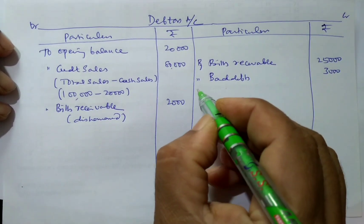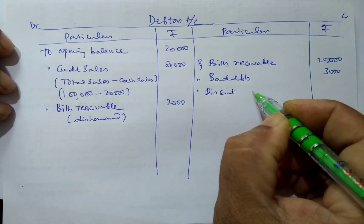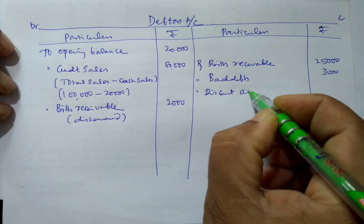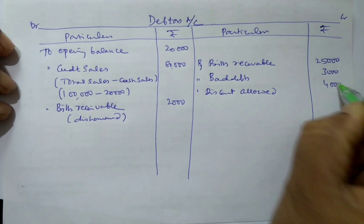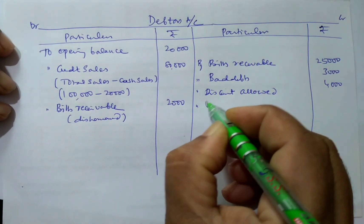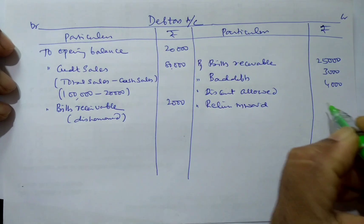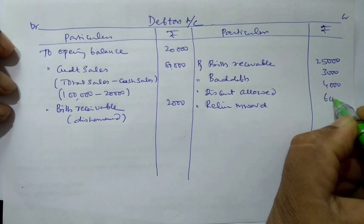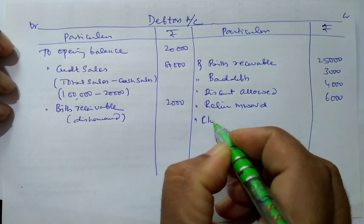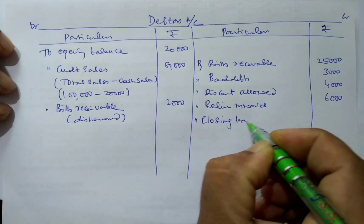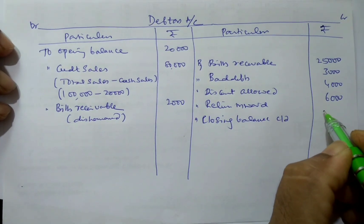And discount allowed is given. These are all expenses to us, but these are the incomes to those debtors. Discount allowed: Rs. 4,000. And there is returns inward — returns inward means sales returns: Rs. 6,000. And the closing balance is given, that is closing balance carried on: Rs. 22,000.